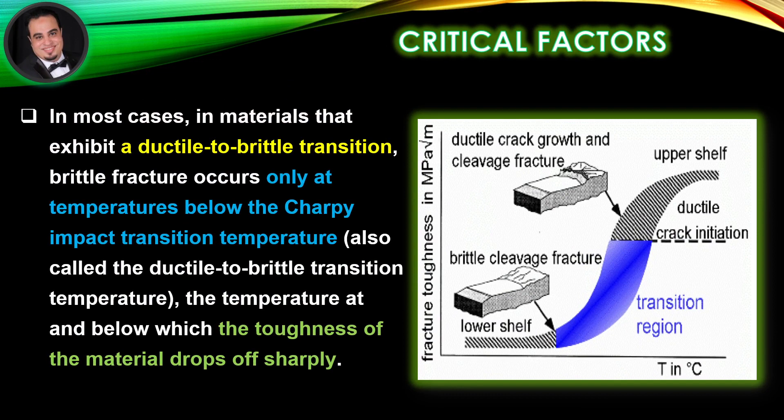In most cases, in materials that exhibit a ductile-to-brittle transition, brittle fracture occurs only at temperatures below the Charpy Impact Transition Temperature, also called the ductile-to-brittle transition temperature — the temperature at and below which the toughness of the material drops off sharply.